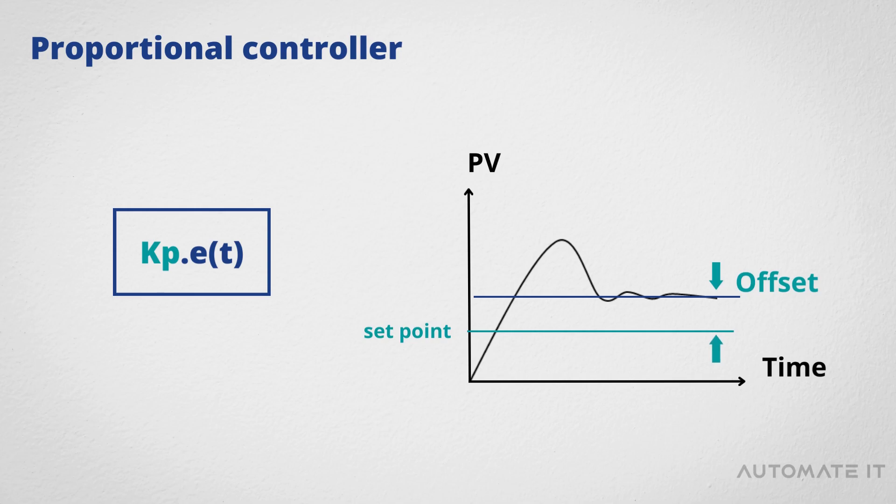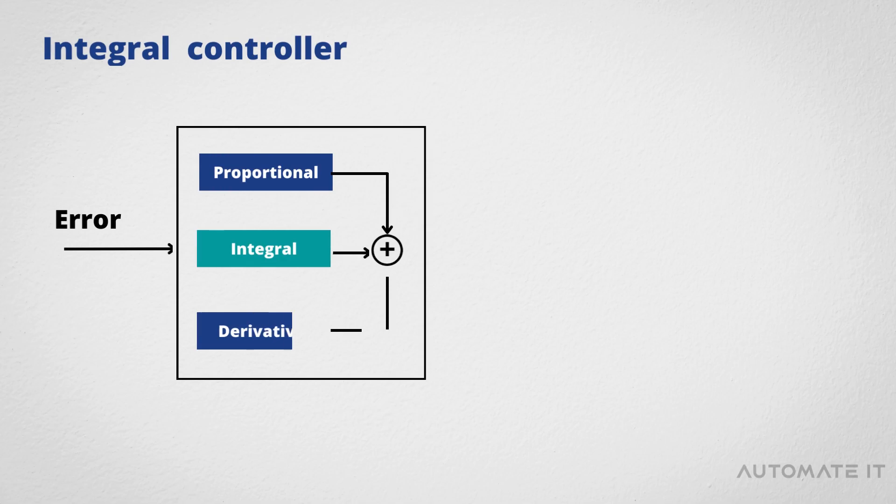That's why I Controller is needed, which provides the necessary action to eliminate the steady-state error. It integrates the error over a period of time until the error value reaches zero.